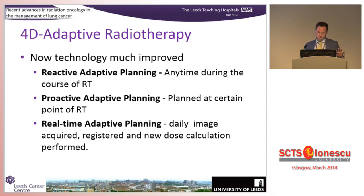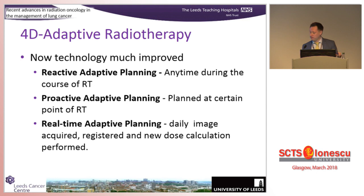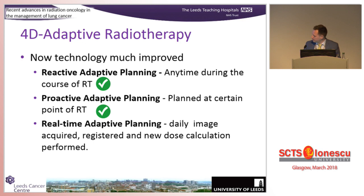And this is the holy grail: can we do real-time adaptive radiotherapy? We get the patient on a bed, perform an image, register that image so they're in the right place, but we also adapt the plan based on that image. We calculate the plan, deliver the dose, and we know exactly what dose we're delivering. At the moment some places are doing this, but even with the current level of technology, it's not routine standard of care - it requires a lot of computer power. However, that will change in the next five years.